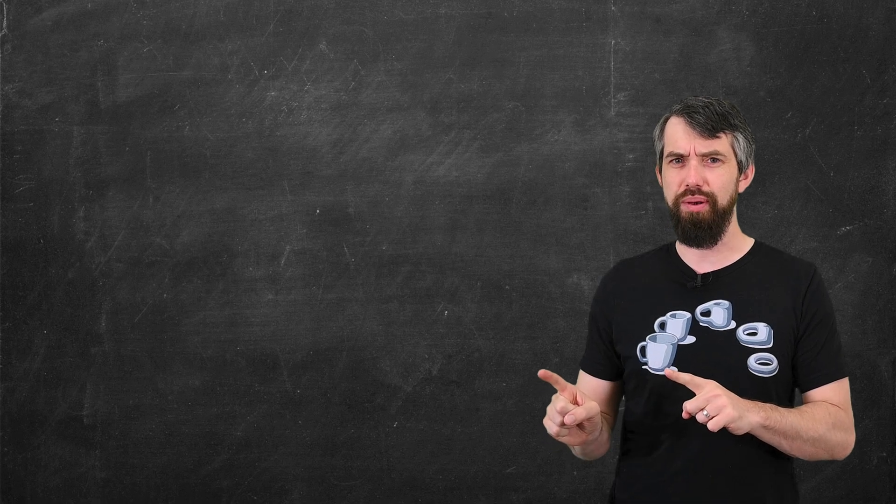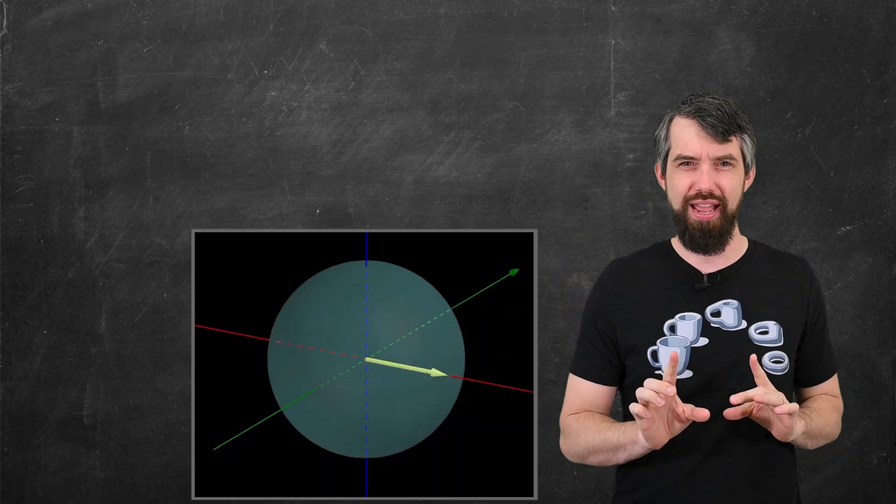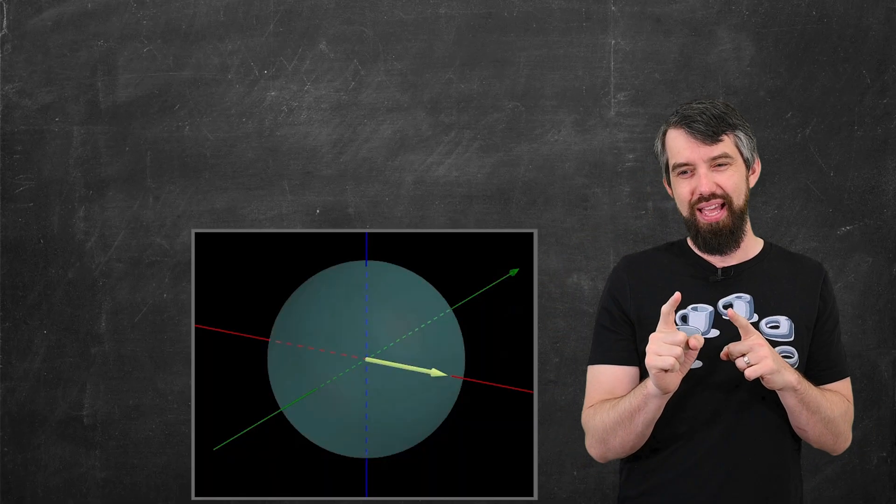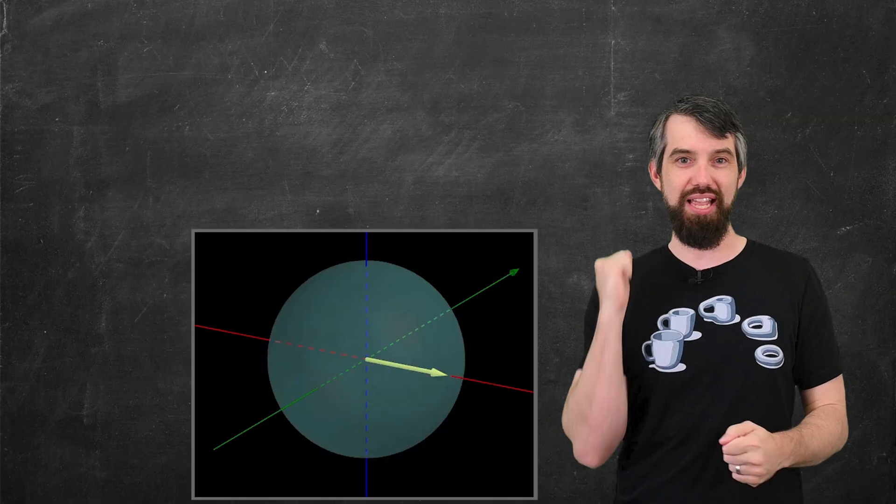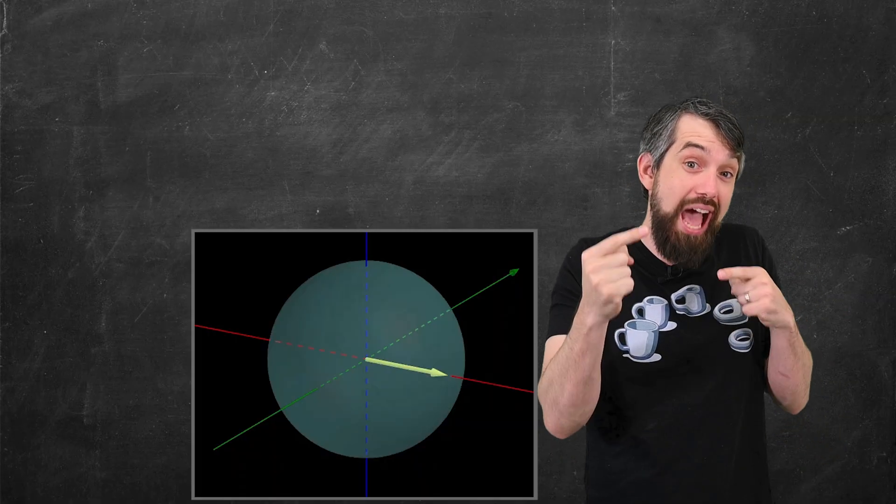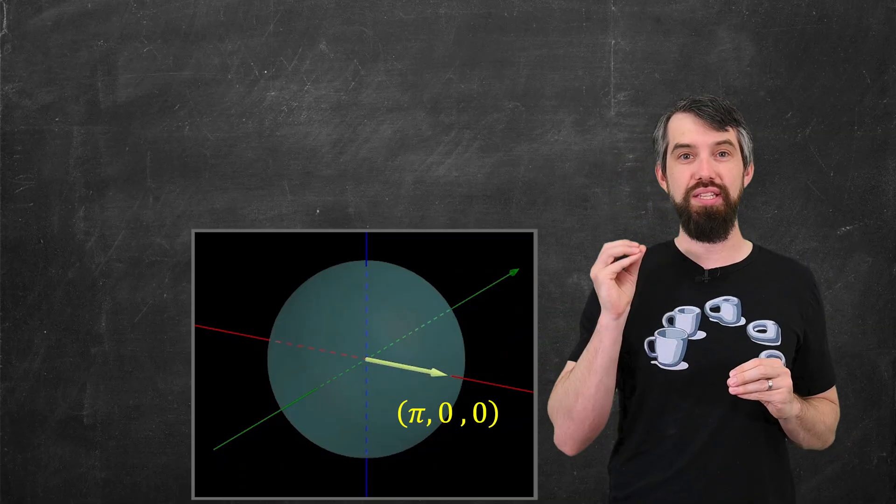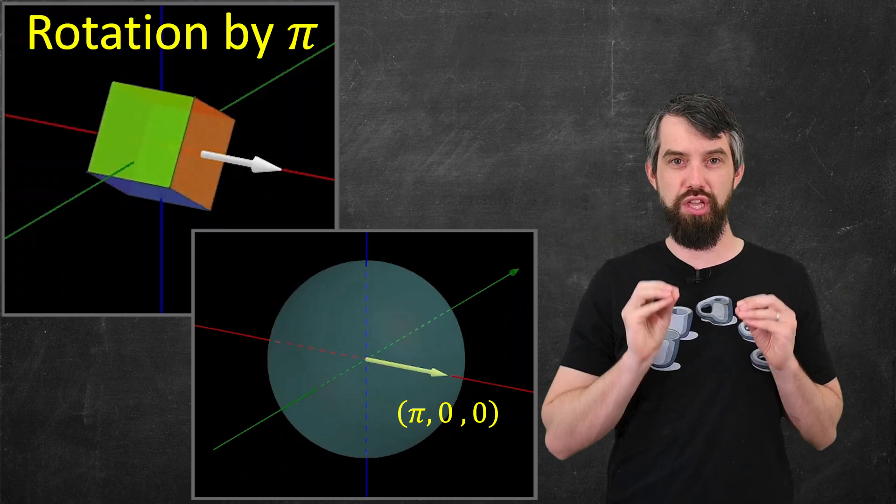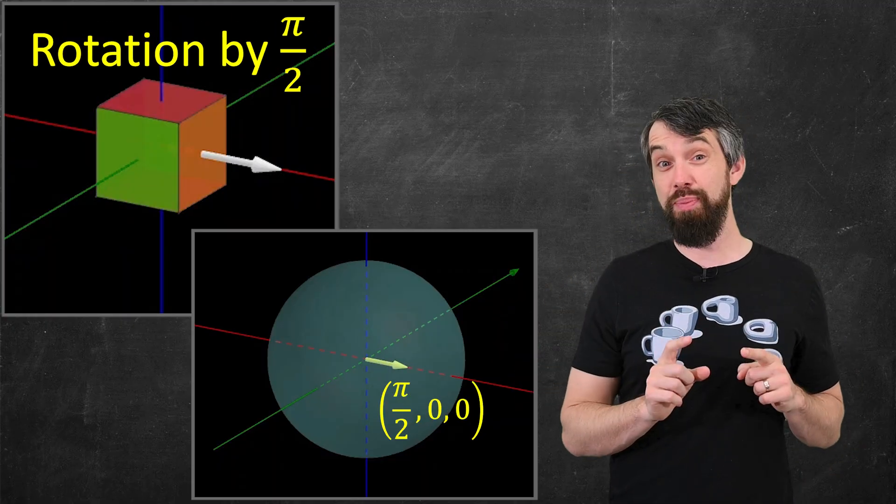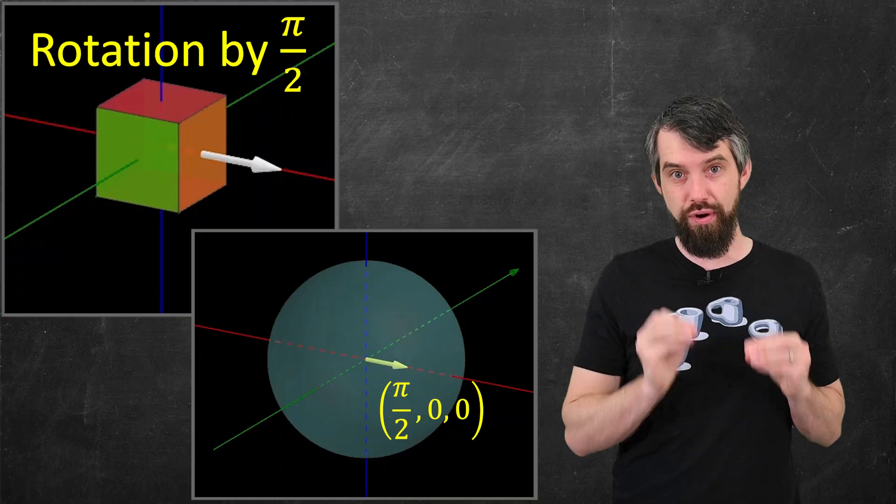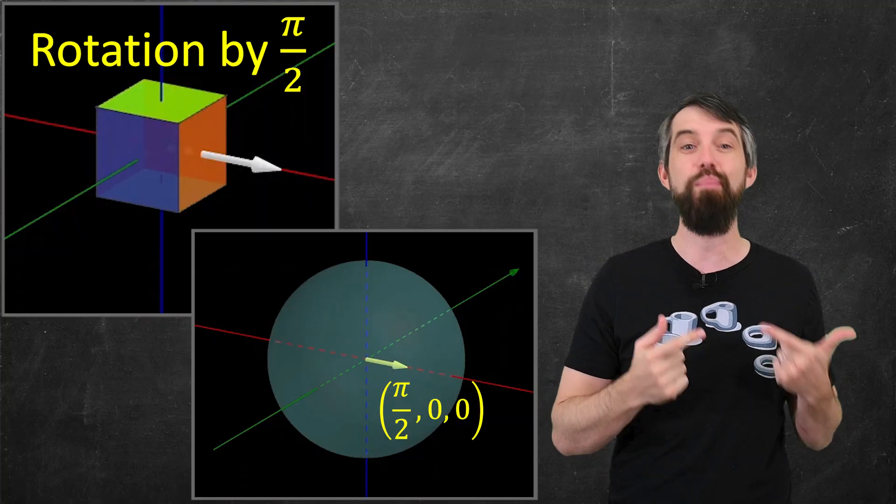Okay you can have an axis of revolution but by how much should you rotate? And this is where the real magic comes in. This ball I haven't told you yet has radius π and so what I'm going to do is use the length of the vector to tell me how much rotation should I do. For example this vector is at the point (π, 0, 0) and what it corresponds to is a rotation of the cube by π radians about that axis of revolution. In contrast this vector its tip is that π/2, 0, and 0 it's a shorter vector and so it still corresponds to a rotation but it corresponds to a rotation only of π/2 about the x-axis.